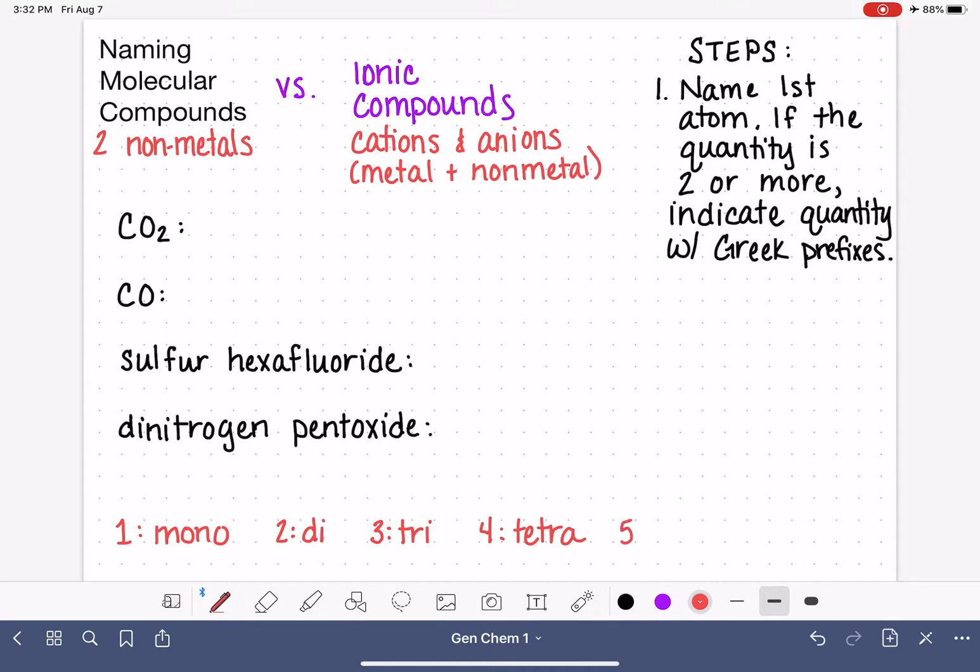Five is penta or pent, and six is hexa or hex. Sometimes we end up dropping the o's or the a's off the end of these prefixes, and I'll go over when we do and when we don't. So here are the Greek prefixes, and these are the prefixes that we're going to use to indicate the quantity of the atom.